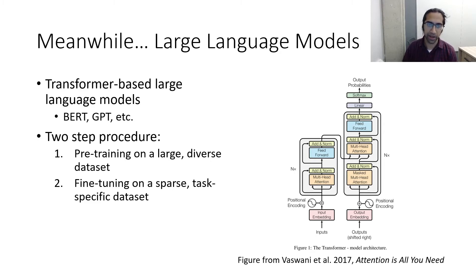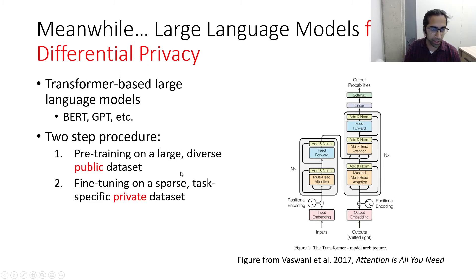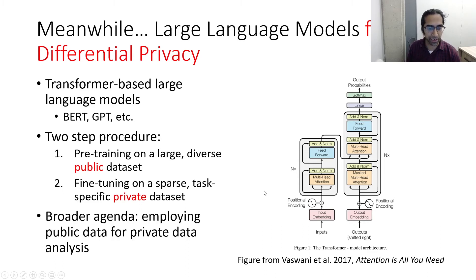This framework is great for differential privacy because it fits in perfectly. The pre-training step uses data scraped from the internet and can be considered a public dataset — sensitivity concerns are not present. You then fine-tune on a smaller, task-specific private dataset, for example a medical dataset. So there is a clean split between a public dataset and a private dataset used for different purposes, which is part of a broader agenda of employing public data for private data analysis.